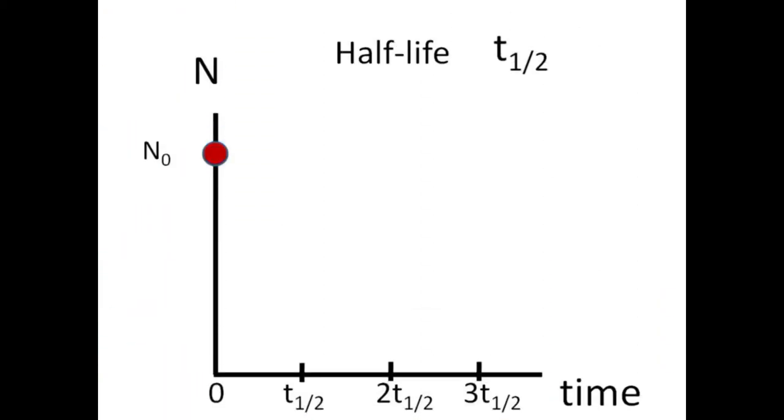If one begins with N0 radioactive nuclei at time t equals zero, then after a single half-life, there will be N0 over two nuclei remaining. After two half-lives, one quarter of the nuclei remain, and after three half-lives, there will be only one-eighth of the original number of radioactive nuclei left.